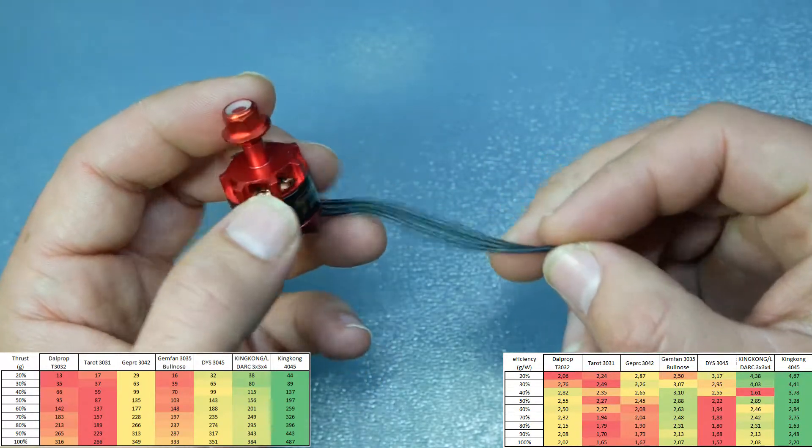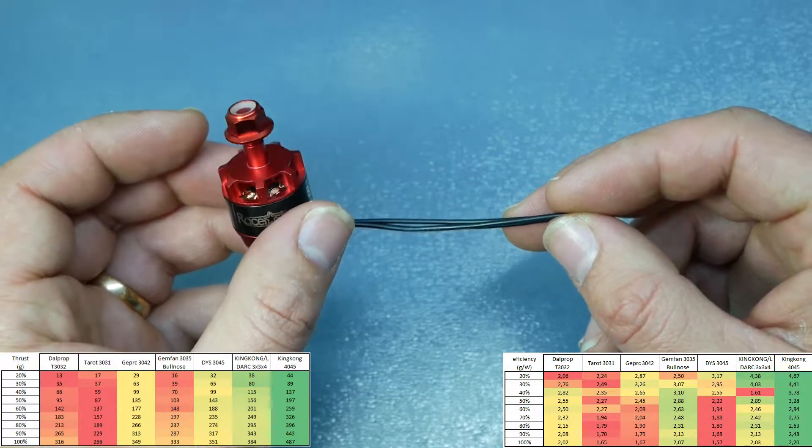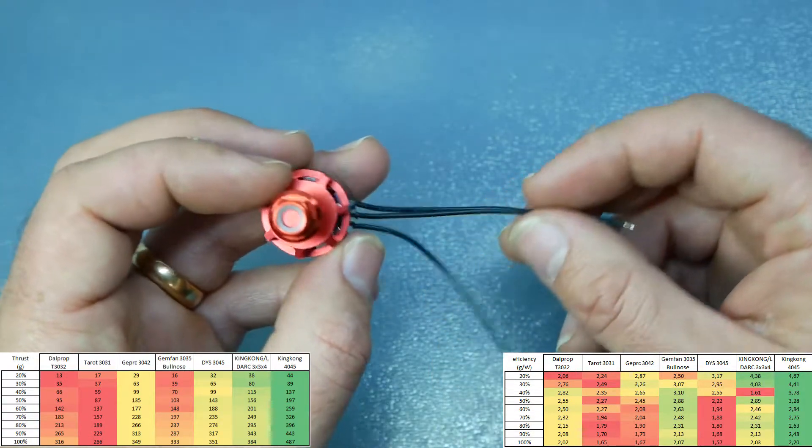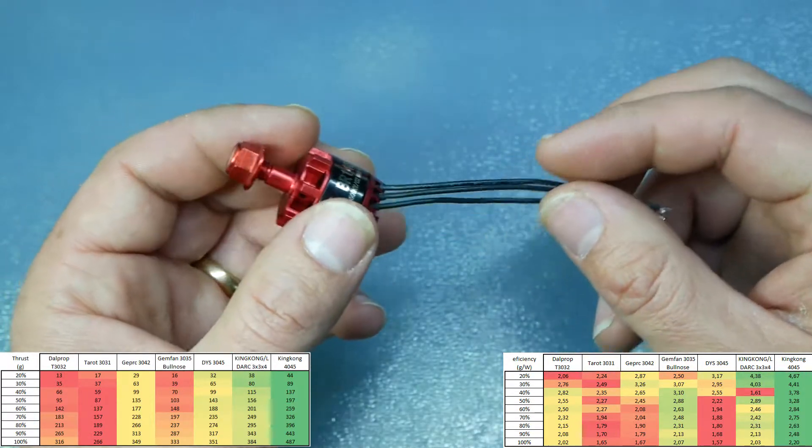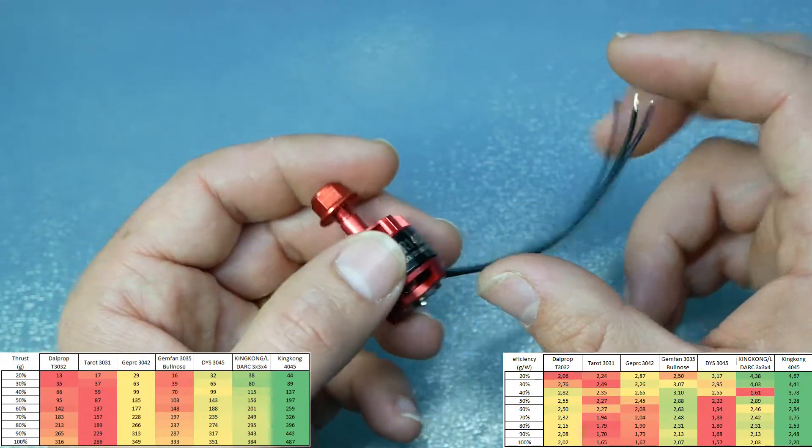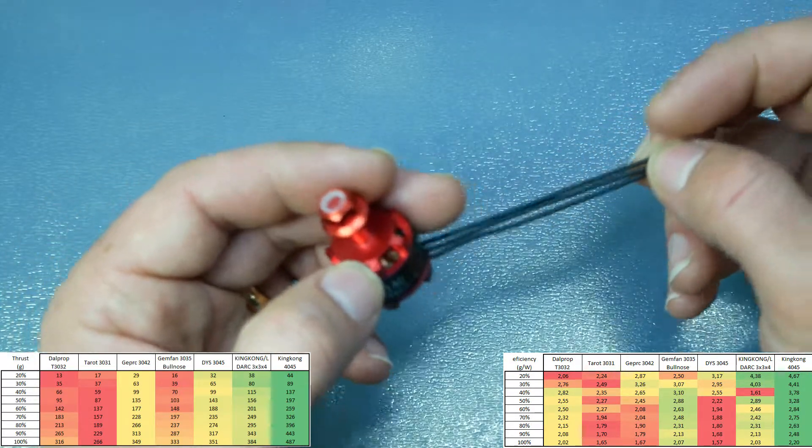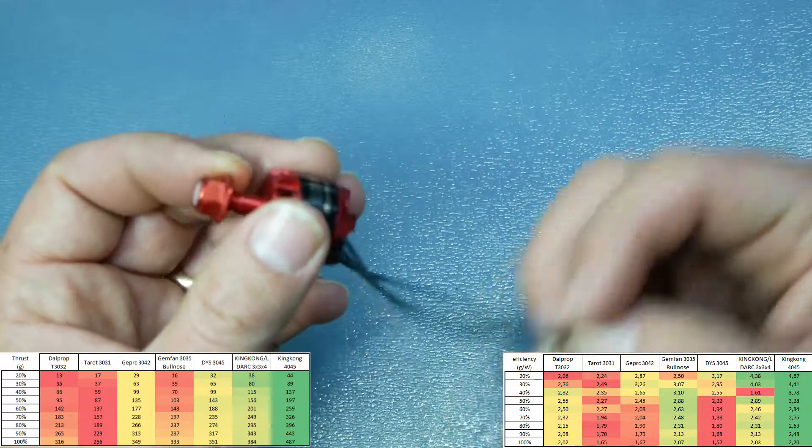If you have an ESC on the arm of the quad you shouldn't have problems with that. For all-in-one ESCs you must consider 60 millimeters so you can route the wires to the ESCs on a 4-in-1.